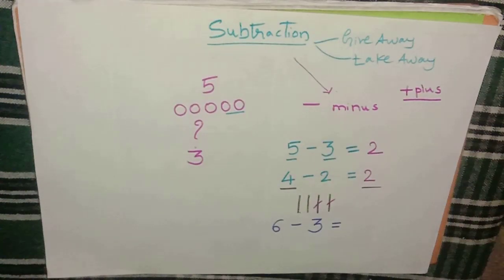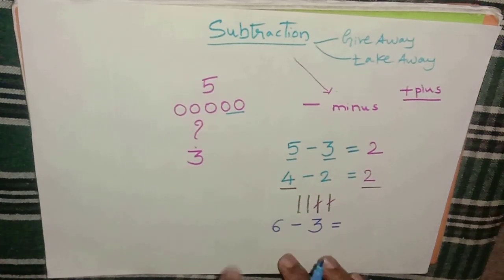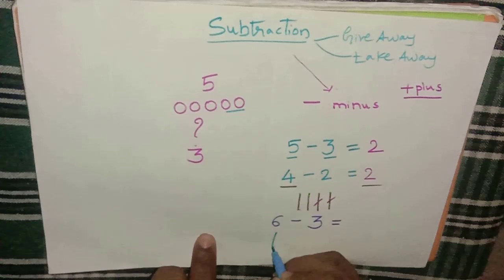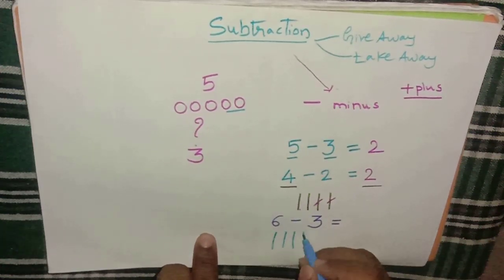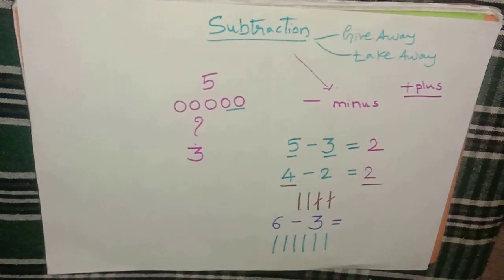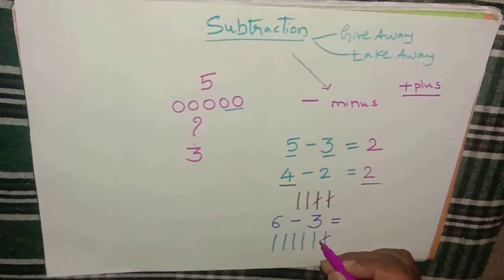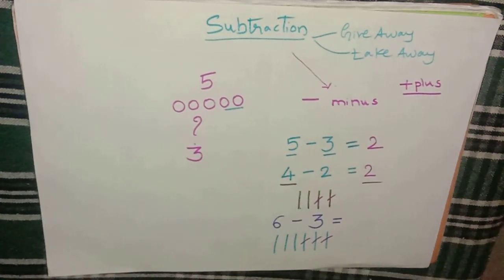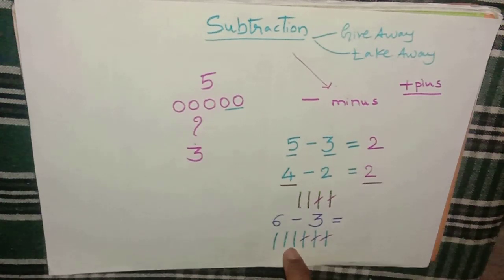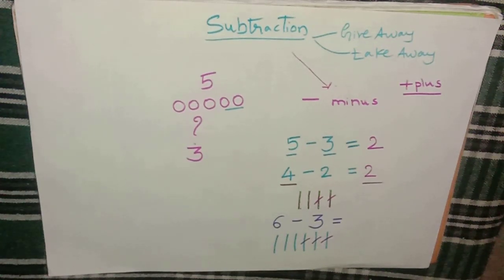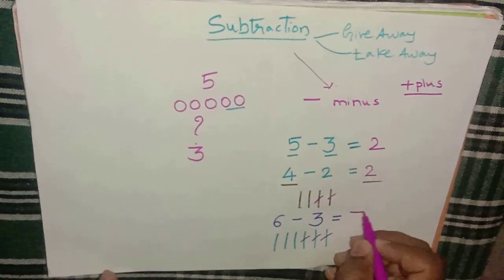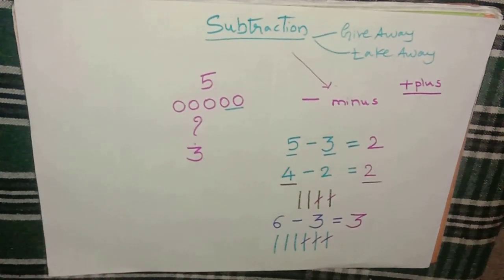Let us verify that using lines. We have six, so draw six lines: one, two, three, four, five, six. Out of these six lines, cancel three: one, two, three. After cancelling, how many lines are left? One, two, three — the same answer as with fingers. So six minus three equals three.